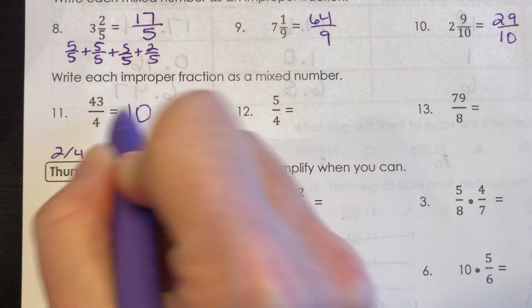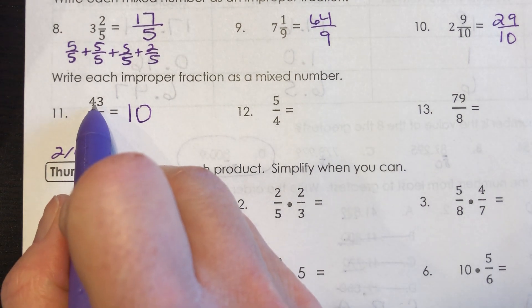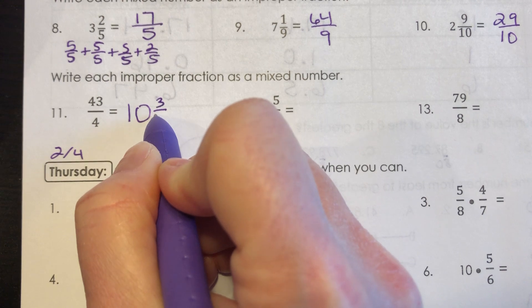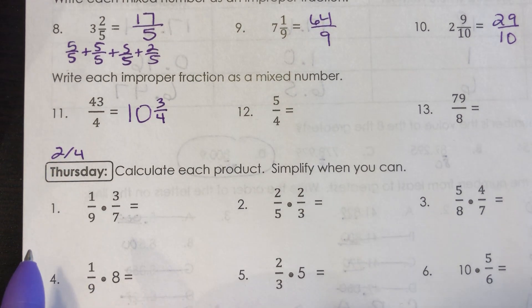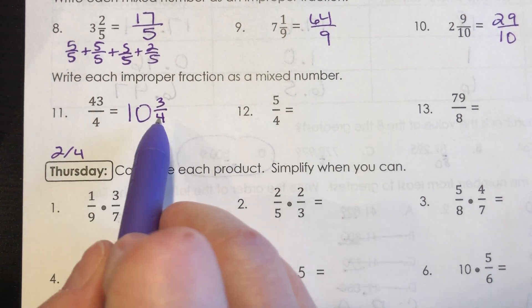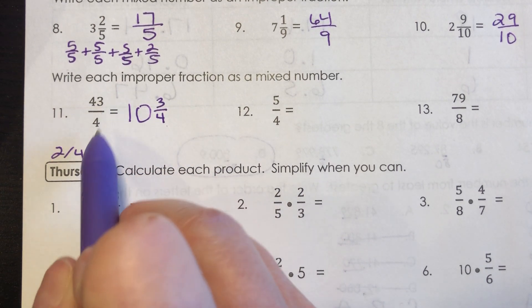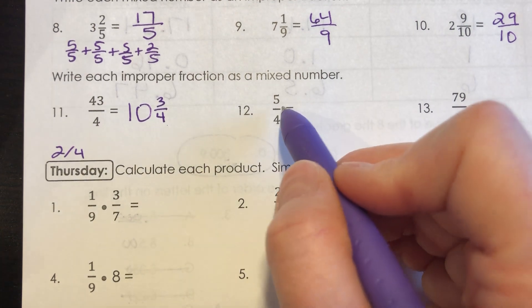So I can fit 10 fours into 43. And to get from 40 to 43, that is 3 extra. So 10 and 3 fourths, remember your denominator never changes. And now you can check your work by doing this. 4 times 10 is 40 plus 3 is 43 fourths.